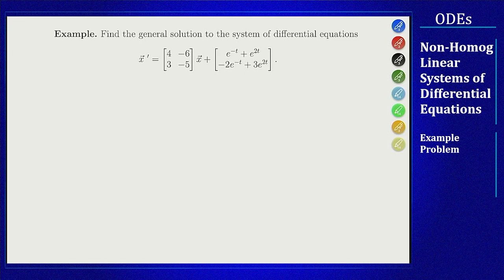We have our system here: x prime equals the matrix [4, -6; 3, -5] times x, plus the vector [e^(-t) + e^(2t); -2e^(-t) + 3e^(2t)]. We'll start, as always, by finding the homogeneous solution. You can use the same information to solve all the different methods, so we'll start with that one.